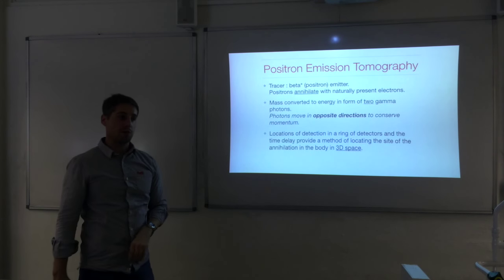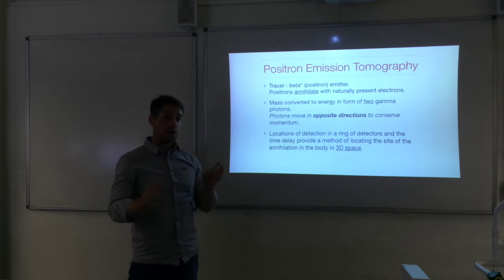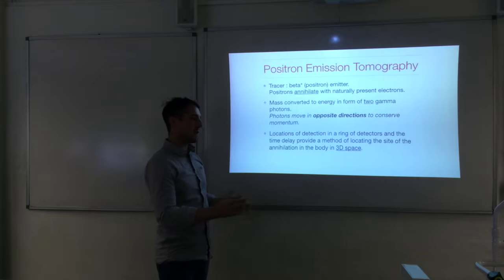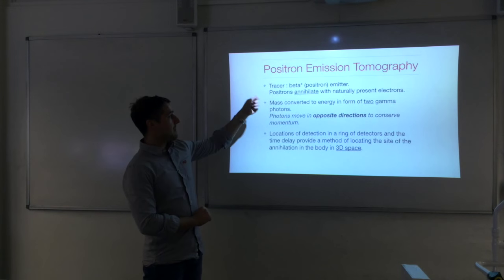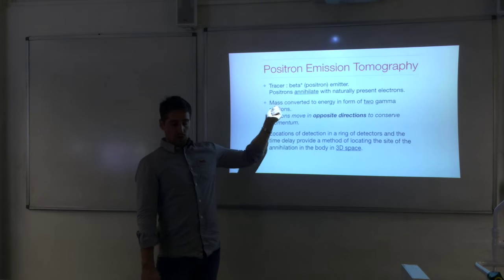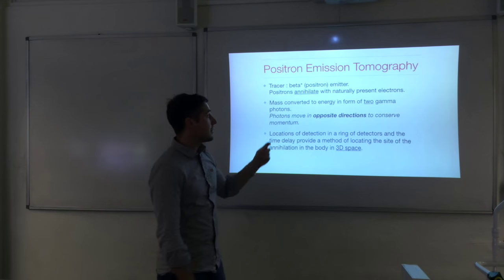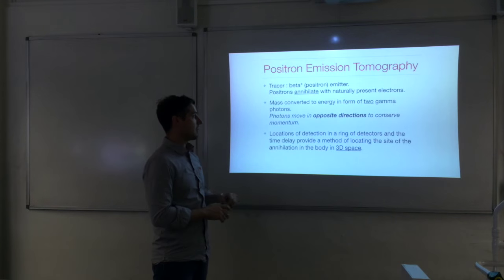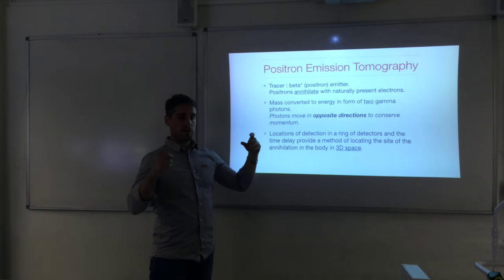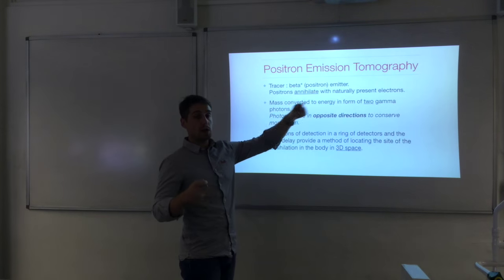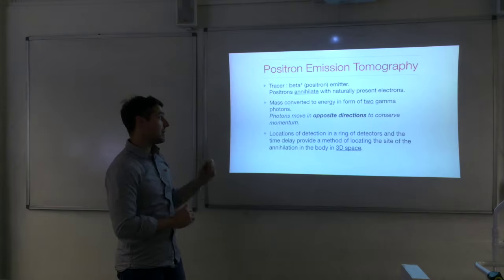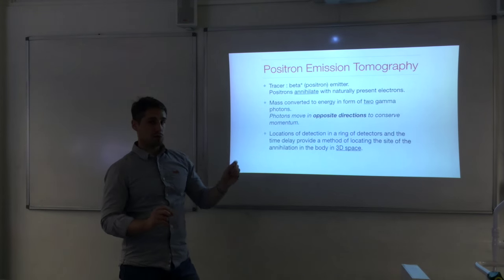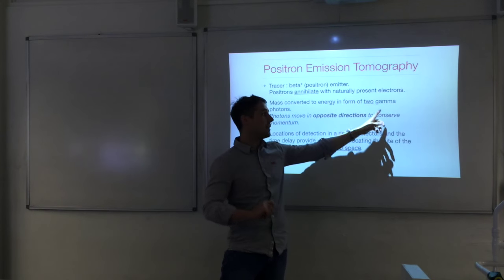In positron emission tomography, instead of gamma rays emitted directly by the tracer, we have a beta-plus emitter. The positrons emitted when the tracer decays annihilate with electrons present in the body tissue where the tracer is located. Because the electron is matter and the positron is antimatter, they annihilate, converting their mass into energy. This produces two gamma photons — it's important to appreciate that for every one annihilation you get two gamma photons.